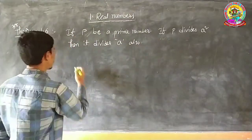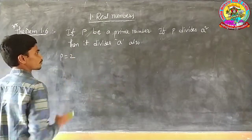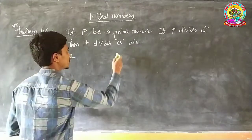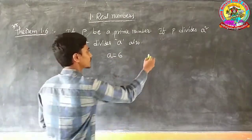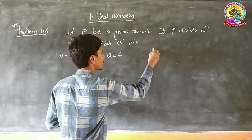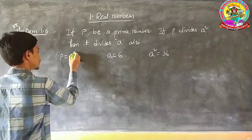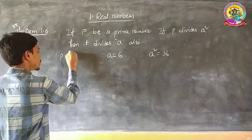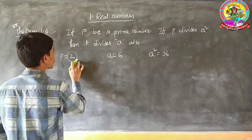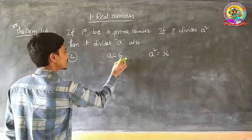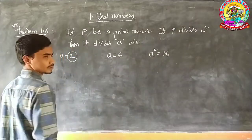For example, if P equals 2 — because 2 is a prime number — and A equals 6, then A squared equals 36. Observe: 36 is divisible by 2, and 6 is also divisible by 2. So if P divides A squared, then it divides A also.